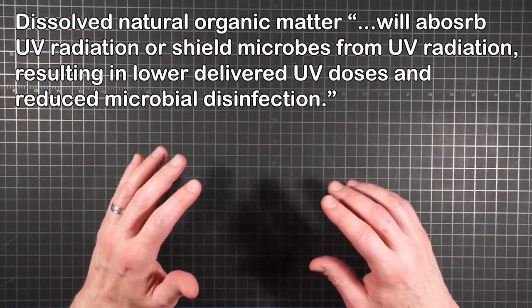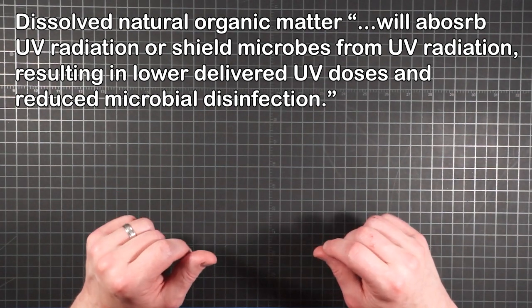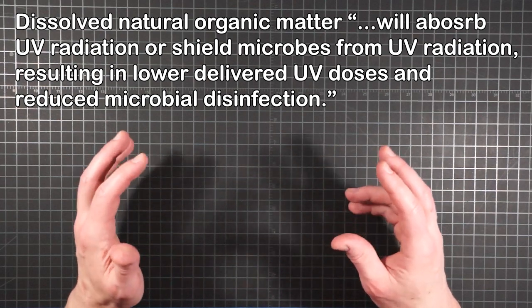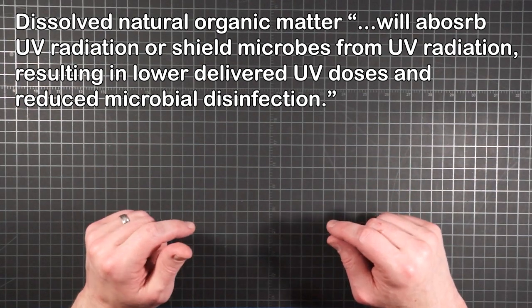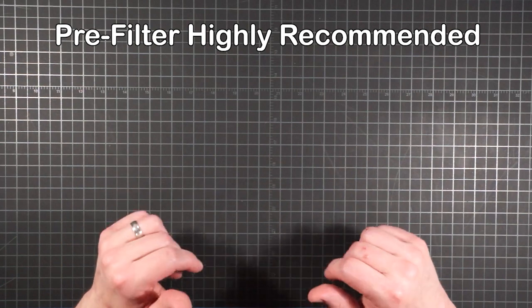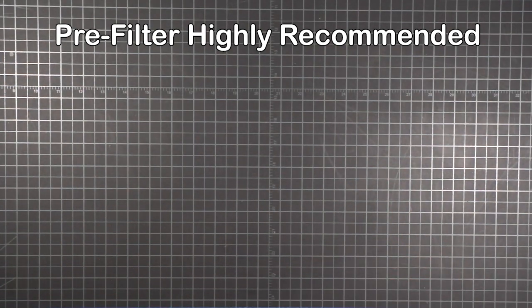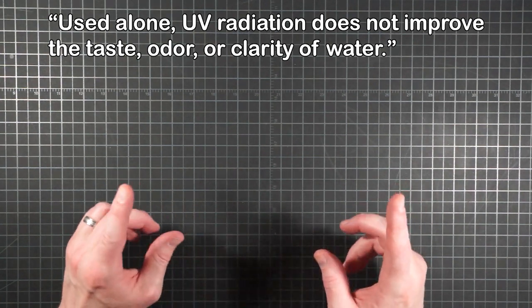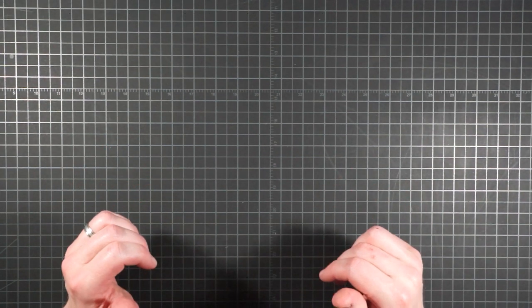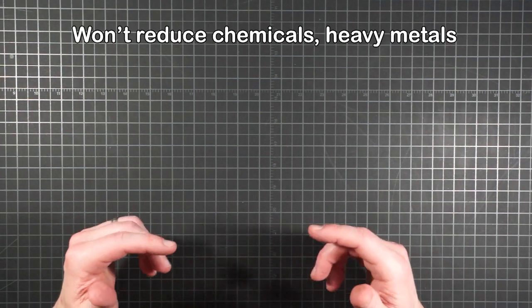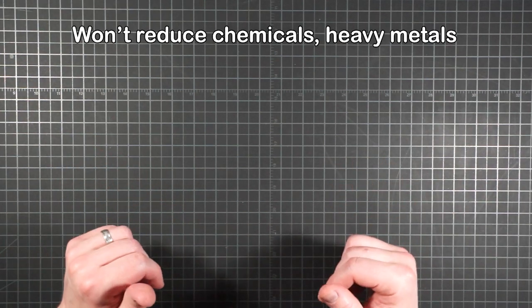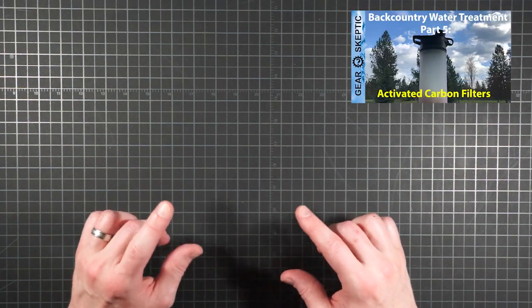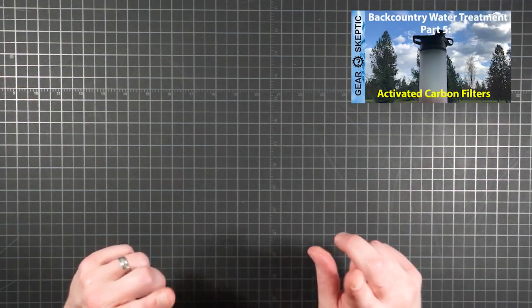Also, dissolved natural organic matter will absorb UV radiation or shield microbes from UV radiation, resulting in lower delivered UV doses and reduced microbial disinfection. Again, some sort of pre-filter is highly recommended. Used alone, UV radiation does not improve the taste, odor, or clarity of water. And since it doesn't remove anything from the water, UV won't reduce chemicals, heavy metals, or other impurities. If any of those things are a concern, consider an activated carbon or adsorption filter like those discussed in part 5.